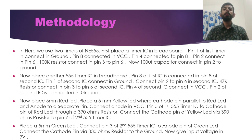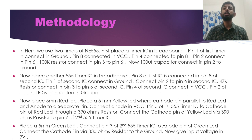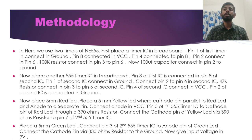Pin 4 of the second IC is connected to VCC and pin 2 of the second IC is connected to ground. We then place a 5mm red LED and a 5mm yellow LED, where the cathode pin of the yellow LED is connected in parallel to the red LED and the anode is connected to a separate pin. The anode is connected to VCC.